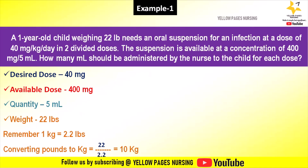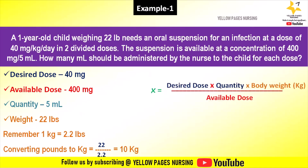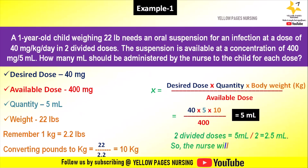The formula to perform the calculation is: X = (desired dose × quantity × body weight in kilogram) ÷ available dose, which equals (40 × 5 × 10) ÷ 400, which gives the answer 5 ml. For two divided doses: 5 ml ÷ 2 = 2.5 ml. So the nurse will administer 2.5 ml for each dose.